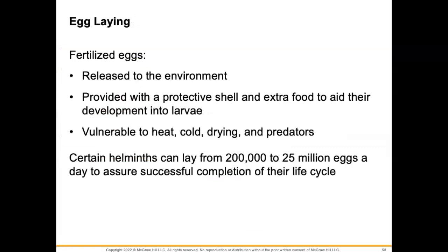Fertilized eggs are released into the environment, provided with a protective shell and extra nutrients to aid their development into larvae. These fertilized eggs are vulnerable to heat, cold, drying, and predators. Certain helminths can lay from 200,000 to 25 million eggs per day to ensure successful completion of their life cycle.